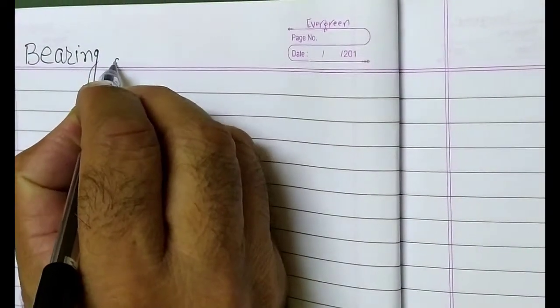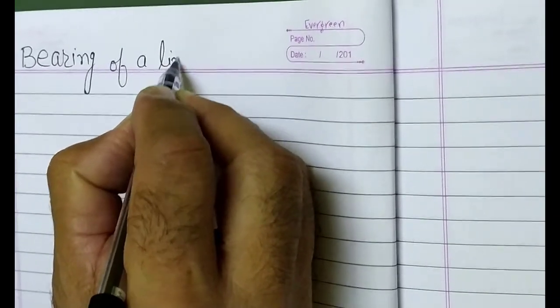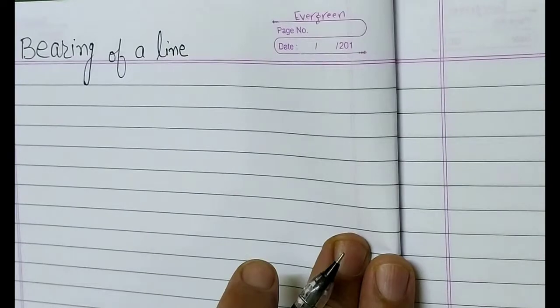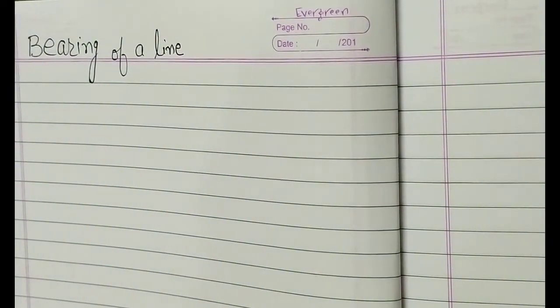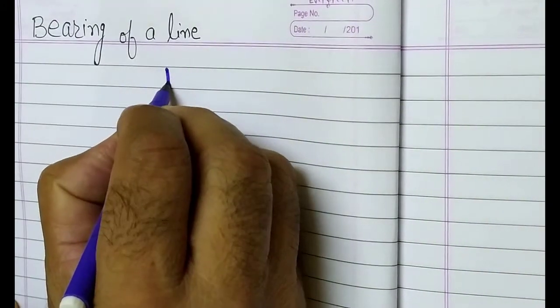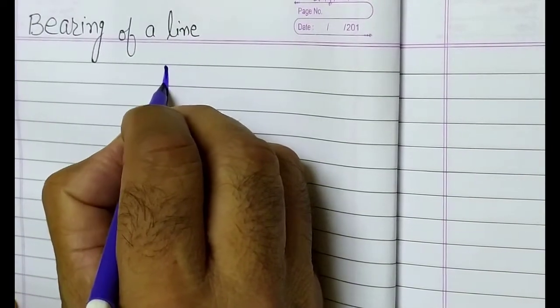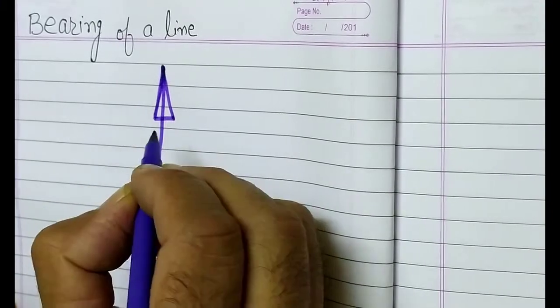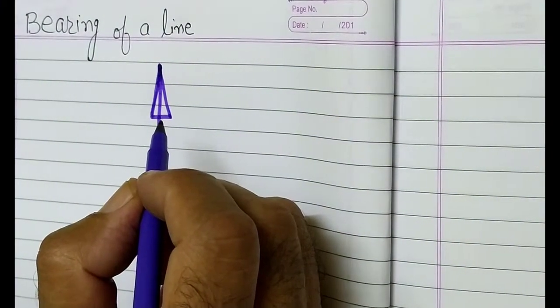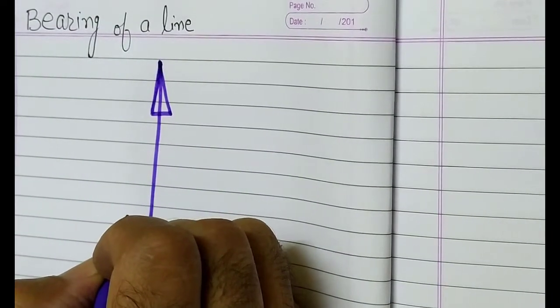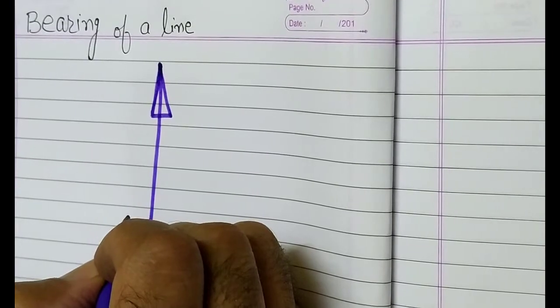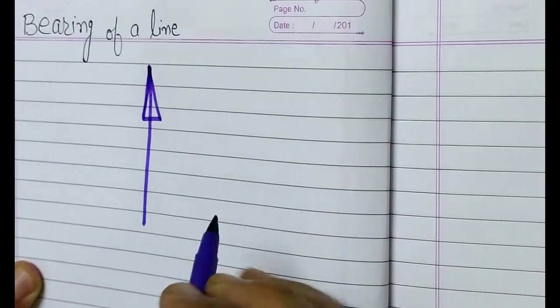Today we are going to start the bearing of a line. Bearing of a line is defined as the horizontal angle which a line makes with some reference direction known as a meridian. I will take this reference line and name it as the north line. We have two types of meridian used in practice.